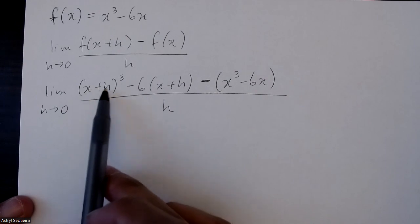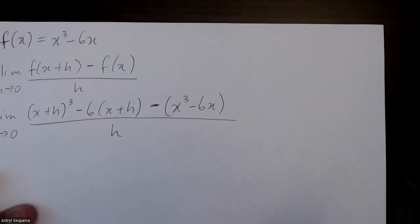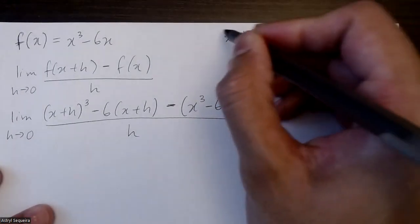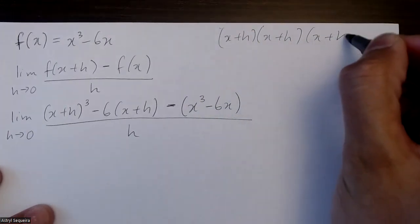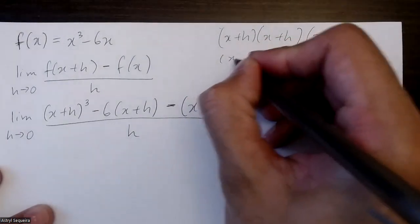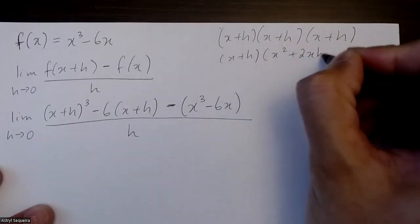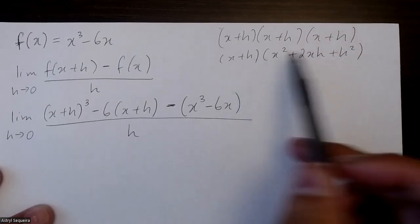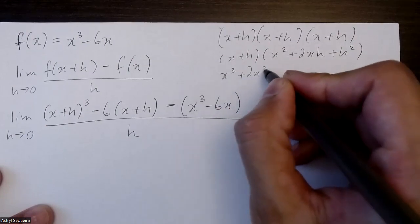I want to expand (x+h)³, so I'll do that on the side. That's (x+h) times (x+h) times (x+h). I'll FOIL out the first two brackets: (x+h)(x+h) gives x² + 2xh + h². Then I multiply that result by the remaining (x+h), giving x³ + 2x²h.